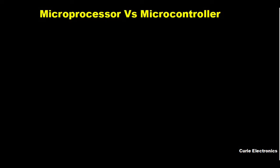A microprocessor is generally used for general purpose applications. A microcontroller, on the other hand, is used for specific applications like a TV remote, TV, washing machine, or oven — such kind of specific applications.